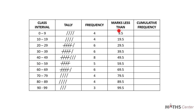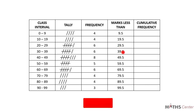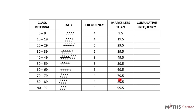To draw the cumulative frequency curve, we will need the marks less than and the cumulative frequencies. We know that the marks less than are the upper class boundaries of the class intervals. The upper class boundaries are 9.5, 19.5, 29.5, 39.5, and it continues up to 99.5, just as we learned from the previous video.